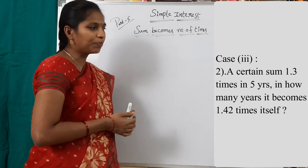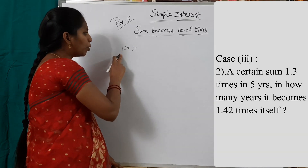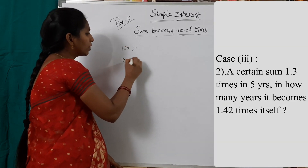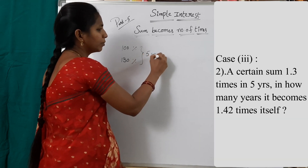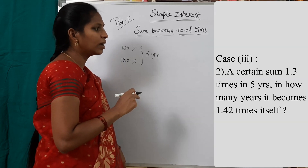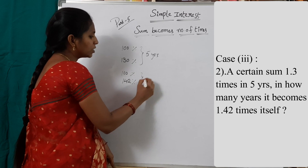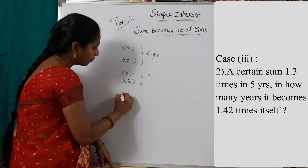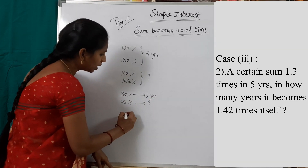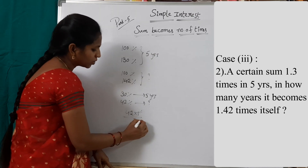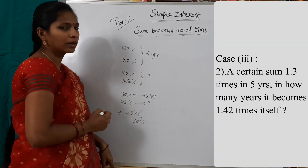Second question in Case 3: A certain sum becomes 1.3 times itself in 5 years. In how many years does it become 1.42 times itself? Principal = 100%, 1.3 times = 130%, so simple interest = 30% in 5 years. For 1.42 times: amount = 142%, so interest needed = 42%. Cross multiplying: 42 × 5 / 30 = 7 years.